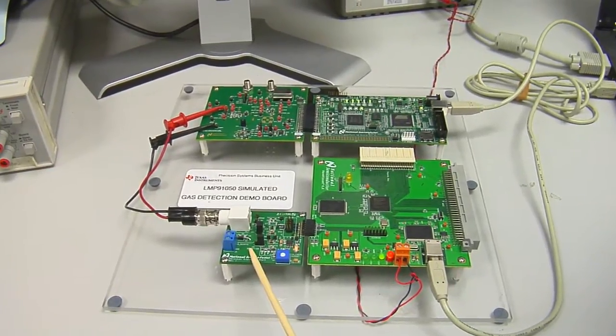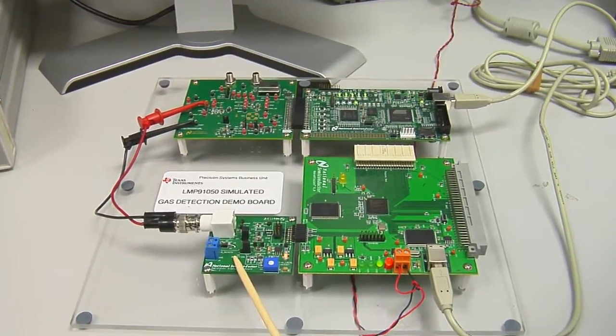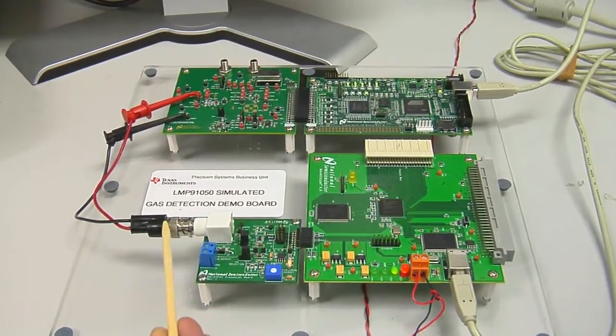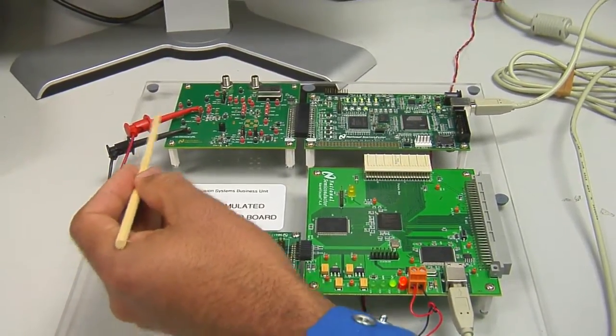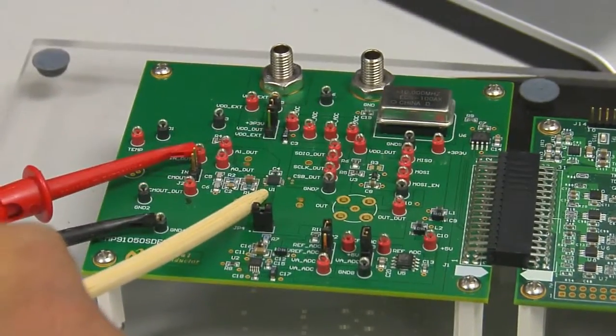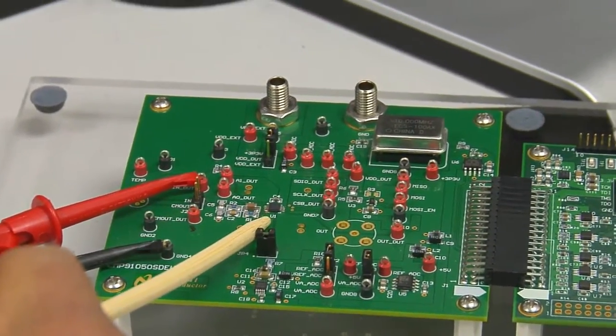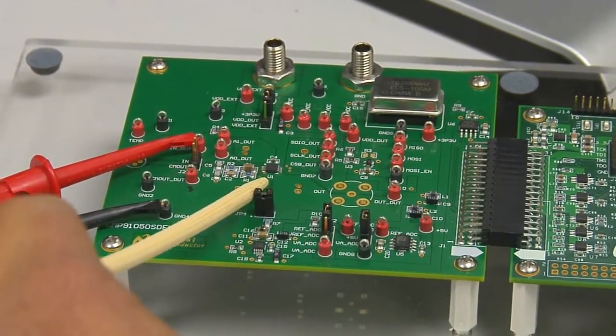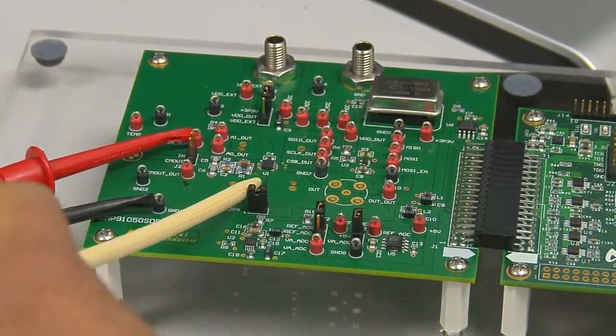We'll be using the DAC to create a simulated thermopile voltage, which we'll be sending over to the LMP9150 board. Here's the LMP9150 here. It's part of our sensor AFE family, and it's a configurable analog front end for NDIR sensing applications.